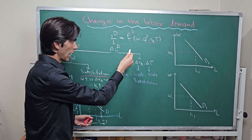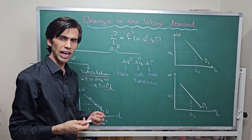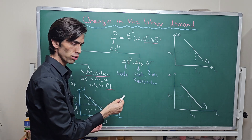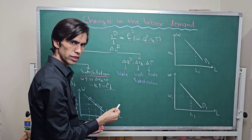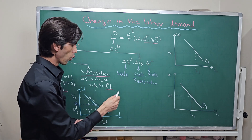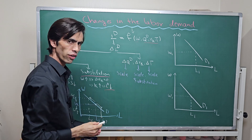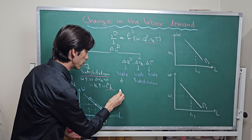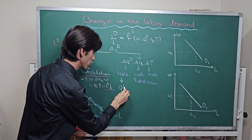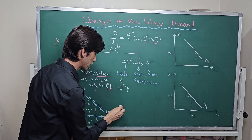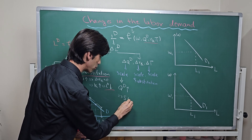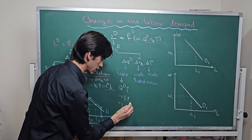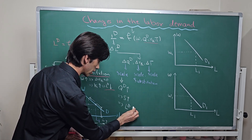But what if a non-wage determinant or non-wage factor changes? For example, the demand for the final output, the rental price of capital, or technology. When the demand for the final output changes, we will have a scale effect. When the quantity demanded increases, the firm will supply more, and the labor demand will increase.